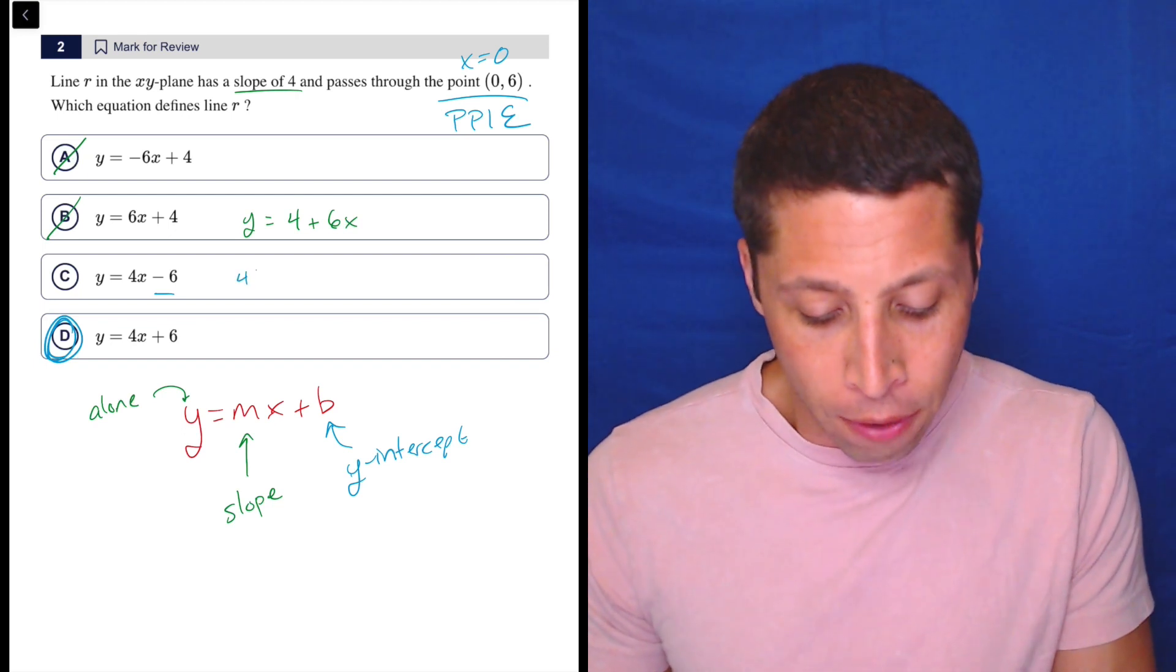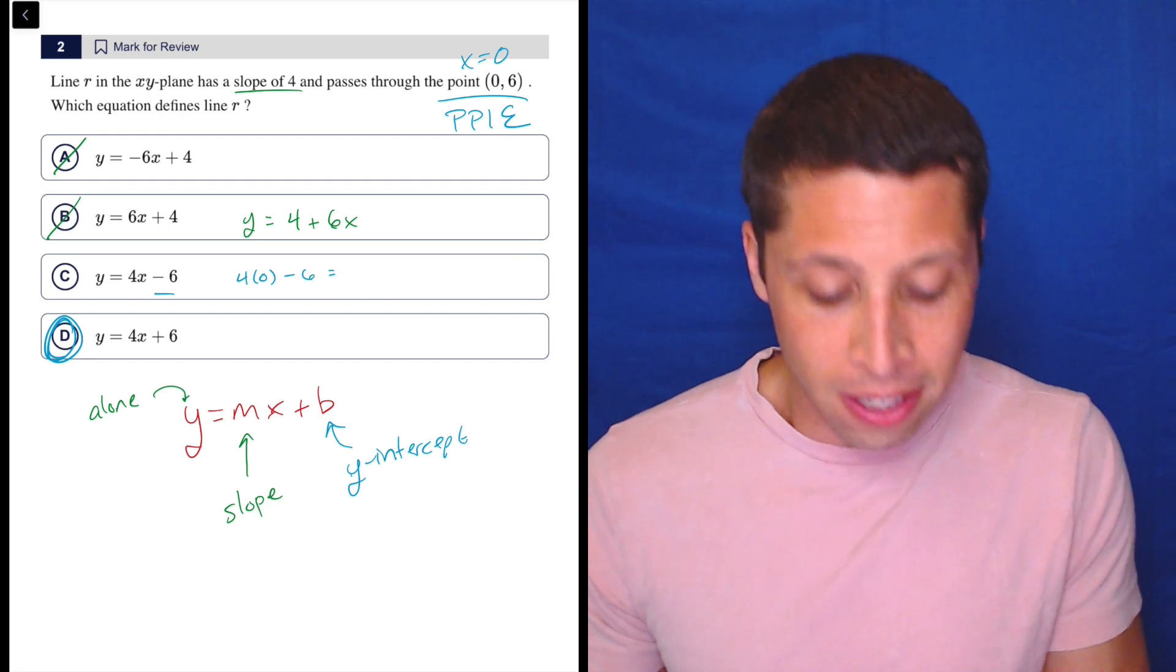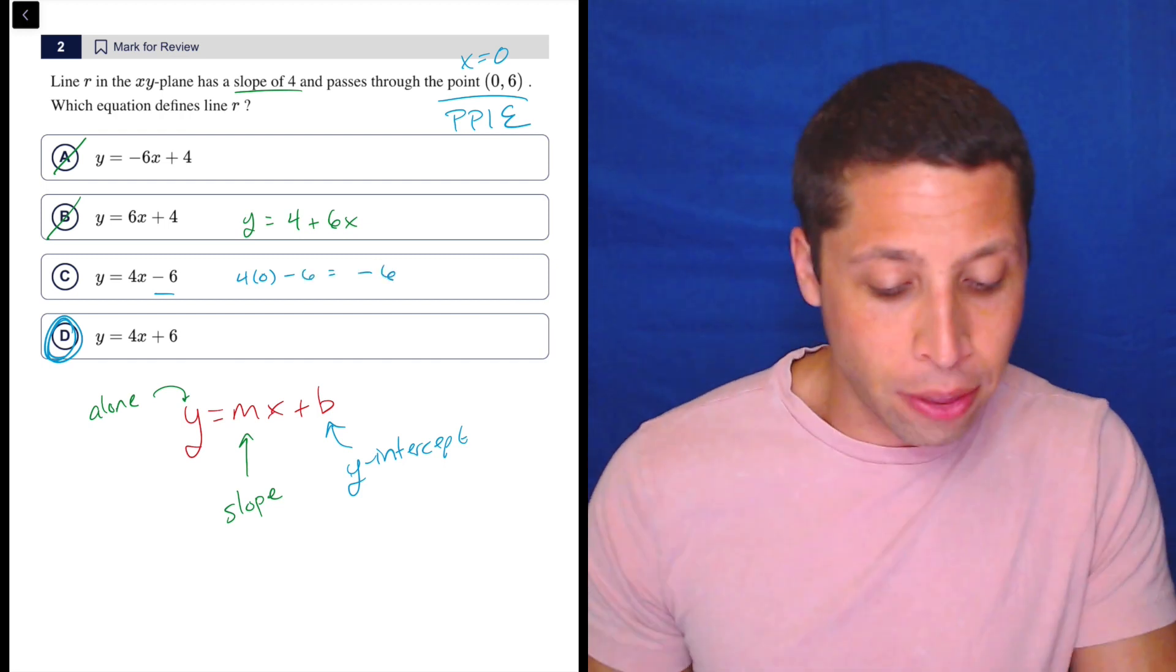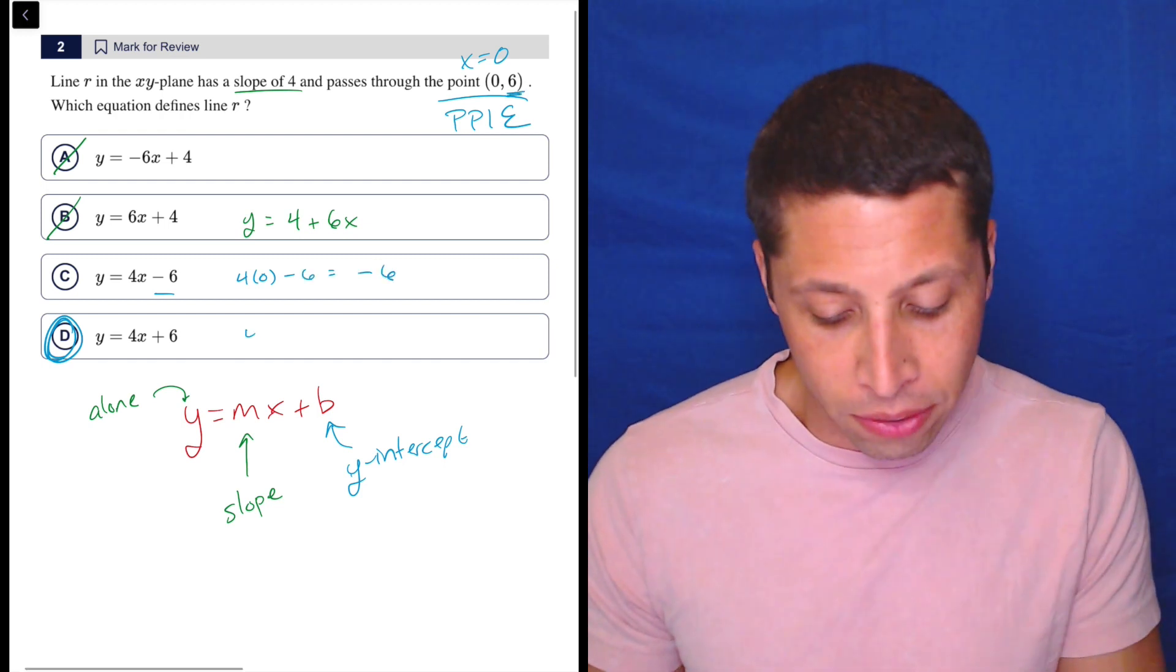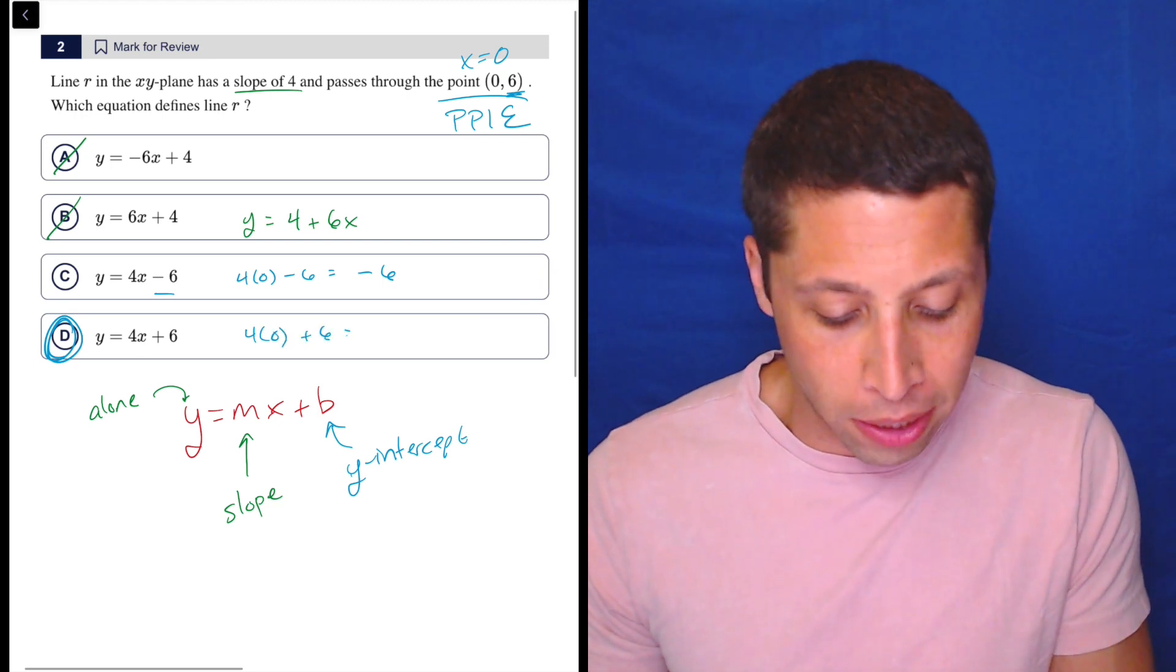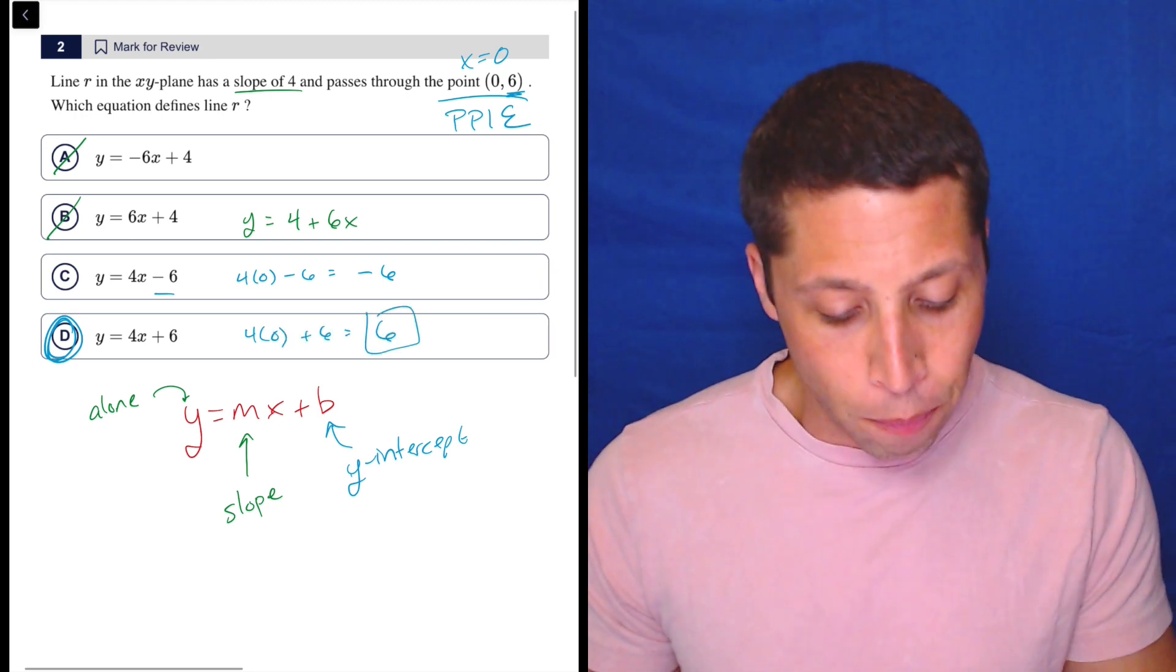So if we plugged in 0 here, 4 times 0 minus 6 is negative 6. So that's not the right y-coordinate. We need it to be positive 6. And here, 4 times 0 plus 6 is 6. So check.